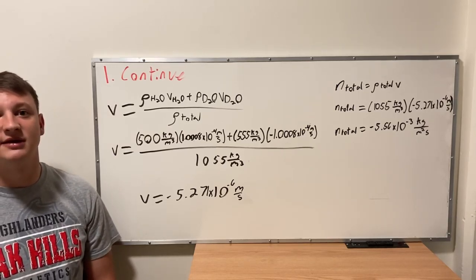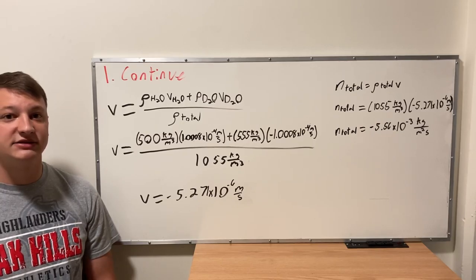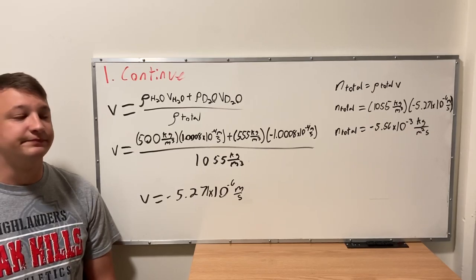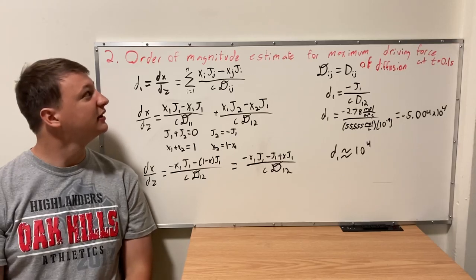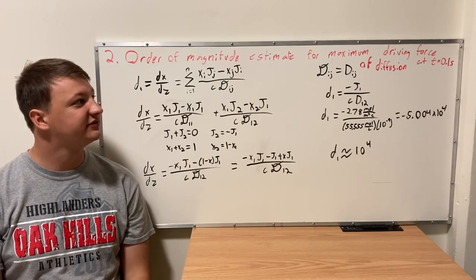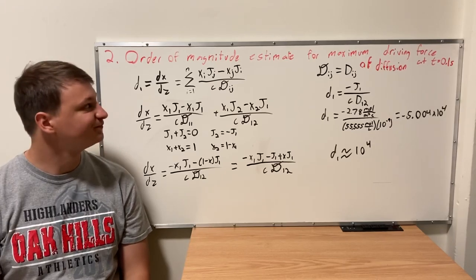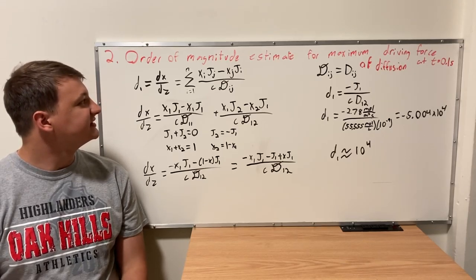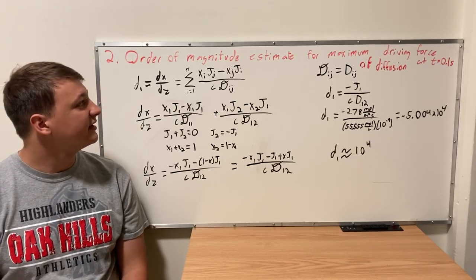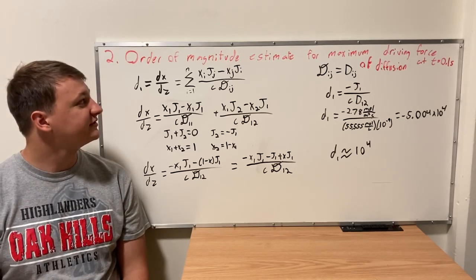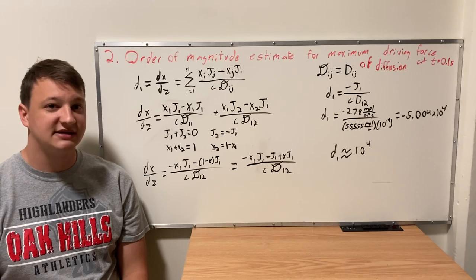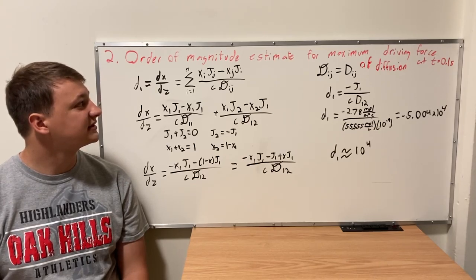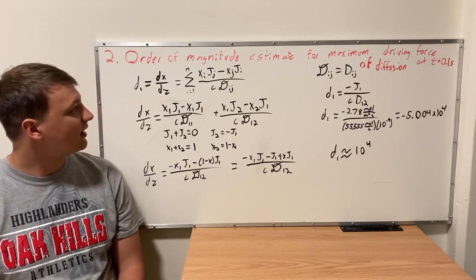That's how we found the overall total mass flux corresponding to the maximum molar diffusion flux. For problem number two, we're looking at the order-of-magnitude estimate for the maximum driving force of diffusion at t = 0.1 seconds. The driving force equals dx/dz, which equals the sum over j of [M_i × J_j − M_j × J_i] divided by the concentration times M_j times diffusivity D_ij.